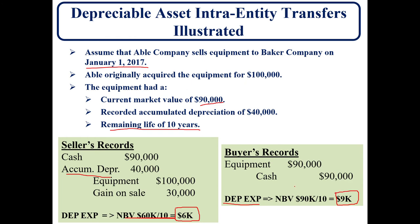We need to reverse this entire transaction on a consolidated basis. Right now, if we don't make an adjustment, the equipment shows at $90,000, but it needs to show at $100,000 — so we have to increase equipment by $10,000. We also have to get rid of the $30,000 gain and credit the $40,000 accumulated depreciation back into the consolidated balance sheet. At the same time, there's a $3,000 difference in depreciation expense, which is currently overstated on a consolidated basis, so we need to credit depreciation expense to bring it back to $6,000.